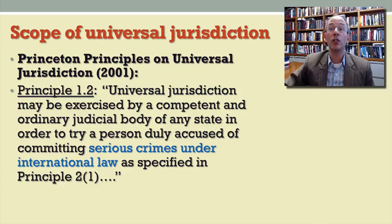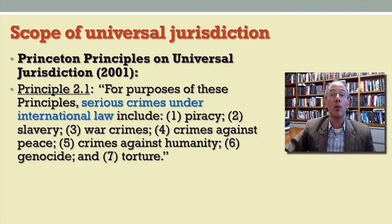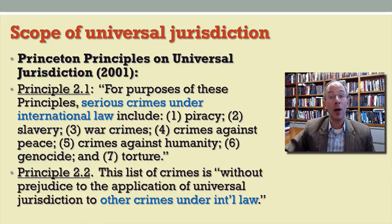The Princeton Principles provide that universal jurisdiction can only apply to serious crimes under international law. Principle 2.1 lists these crimes as those shown on the slide — this is not just for ordinary crimes, nor just for any human rights violation, but rather for a very narrow set of enumerated criminal acts. That set may be narrow but it's not necessarily closed. Principle 2.2 indicates that it might well expand over time, with likely candidates including prescriptions on terrorist acts, particularly when directed at international officials.